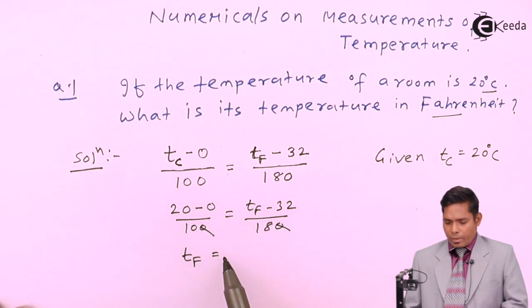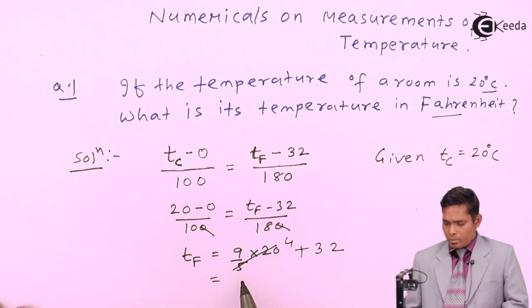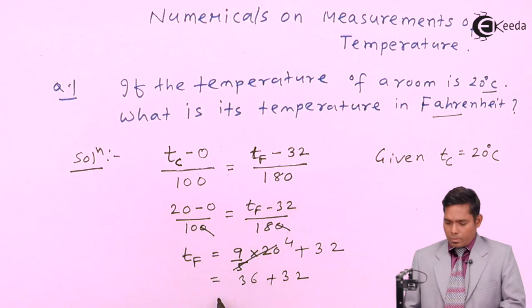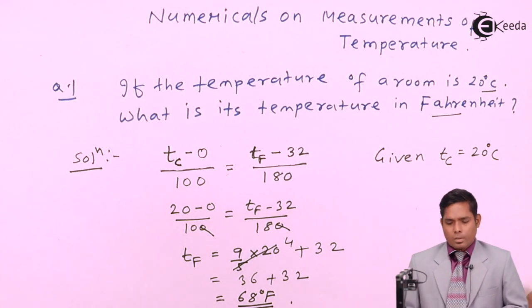This goes to this side, this is 9 by 5. tf equals 9/5 times 20 plus 32. 36 plus 32, so it is 68 degrees Fahrenheit. So this is the answer to this question.